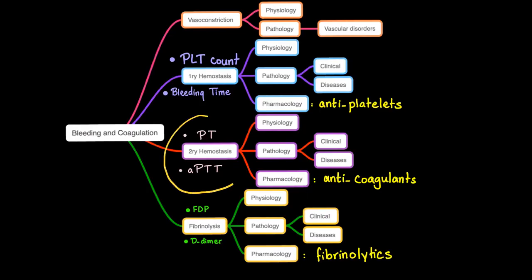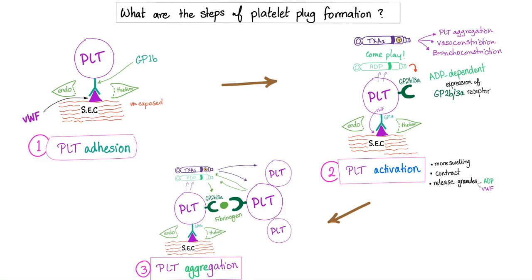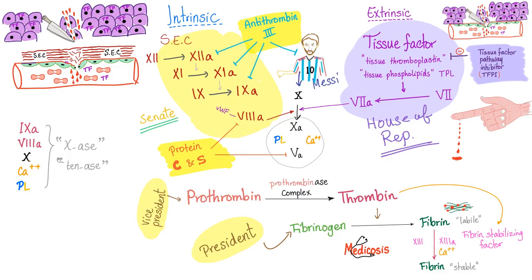Secondary hemostasis defects are tested with PT and PTT. PT tests the extrinsic pathway, which is normal in hemophilia. However, PTT, which tests the intrinsic pathway, is abnormal and therefore prolonged in hemophilia regardless of the subtype. Primary hemostasis is not our concern here; secondary hemostasis is.